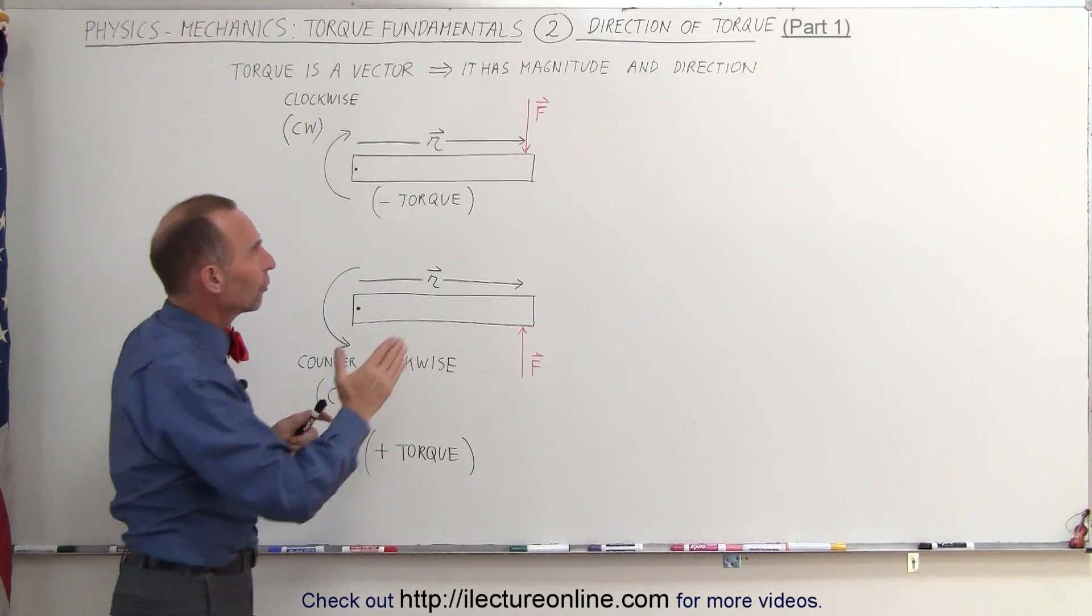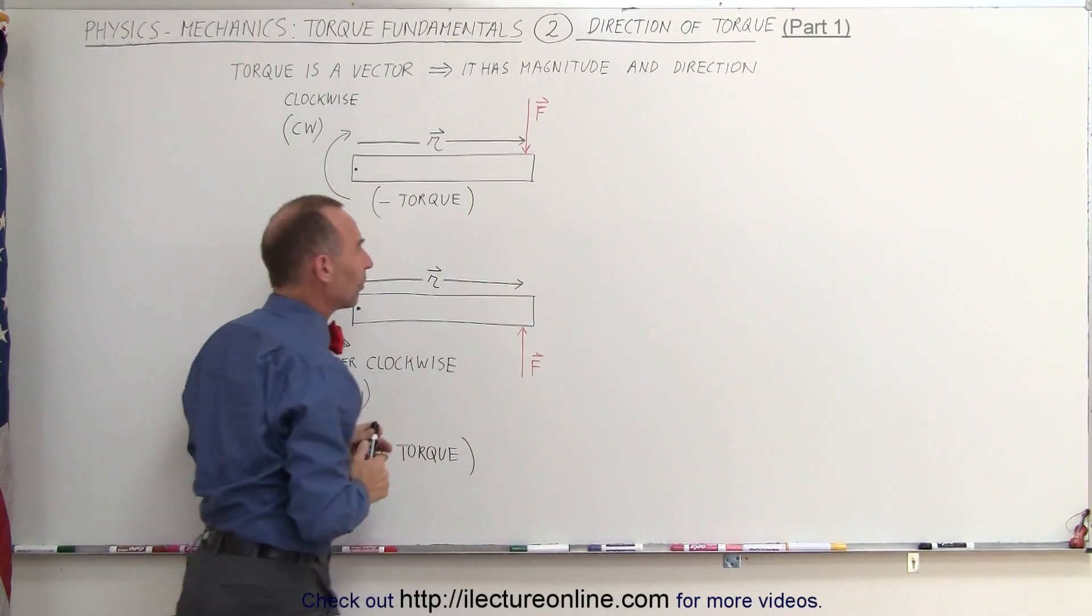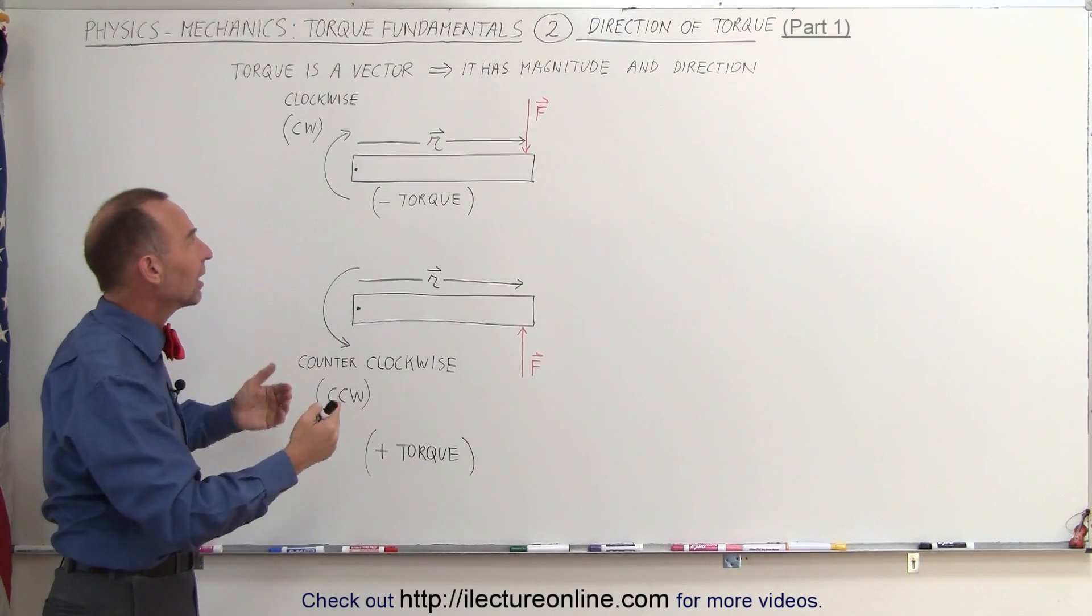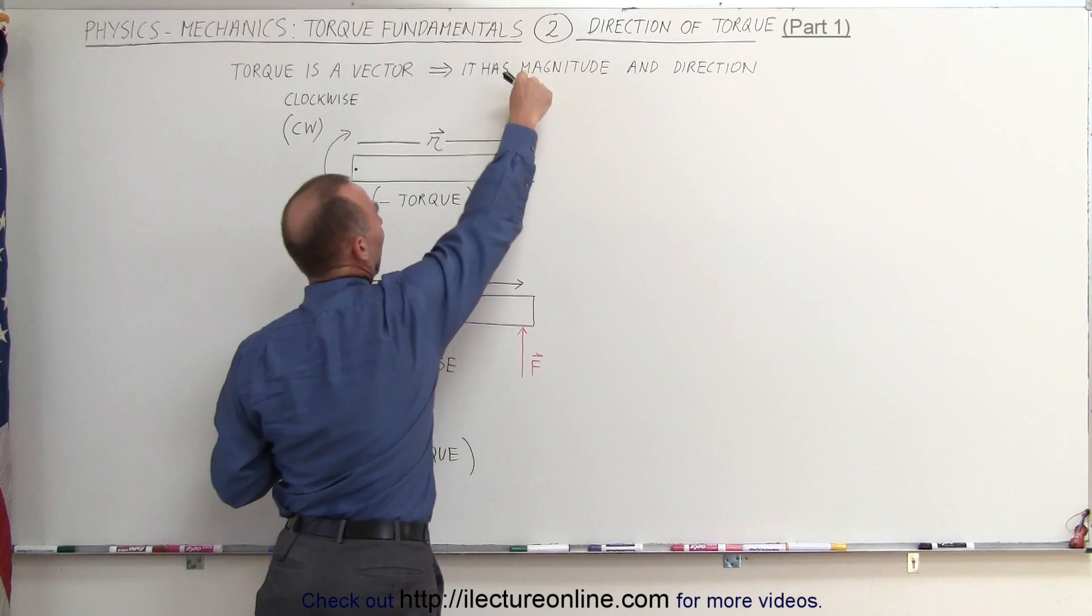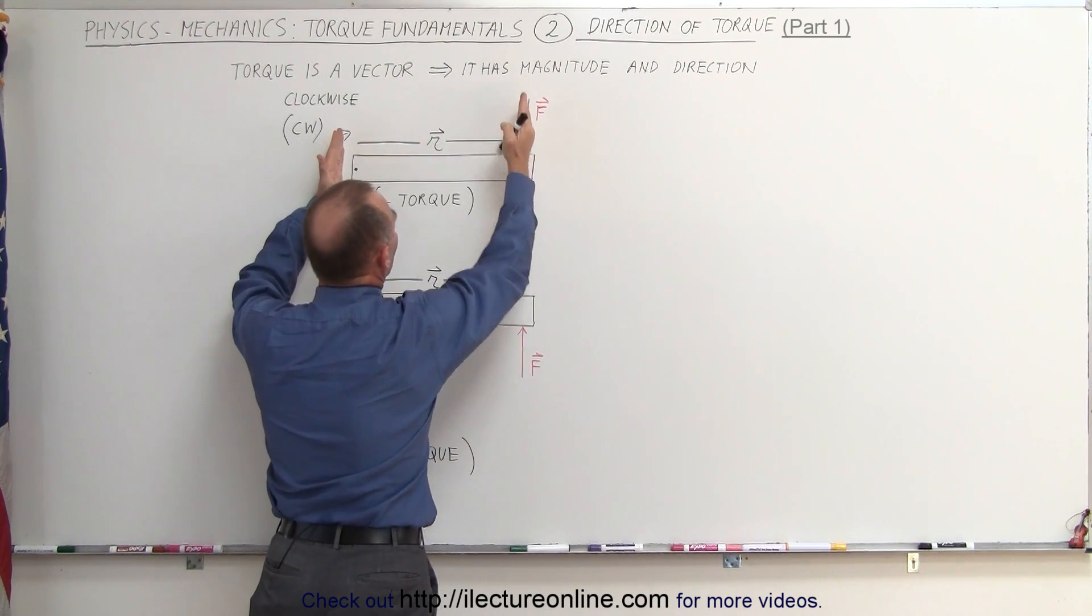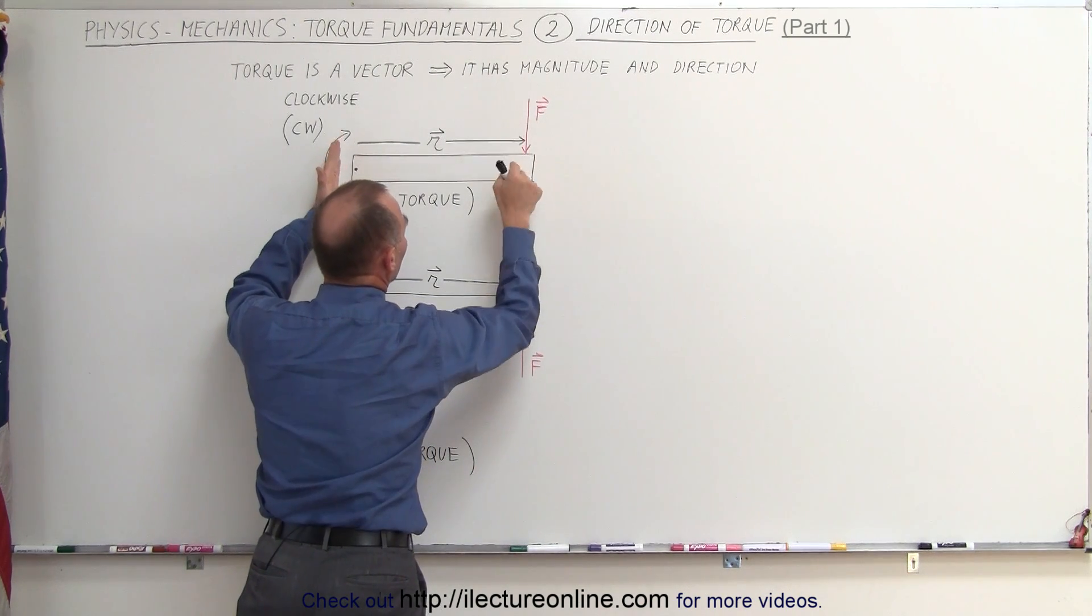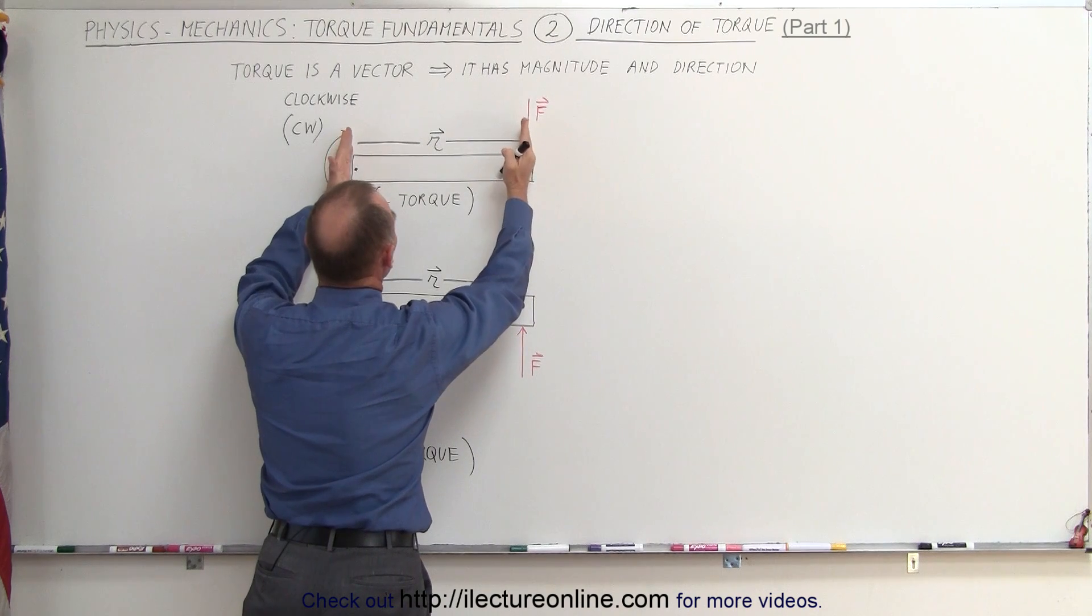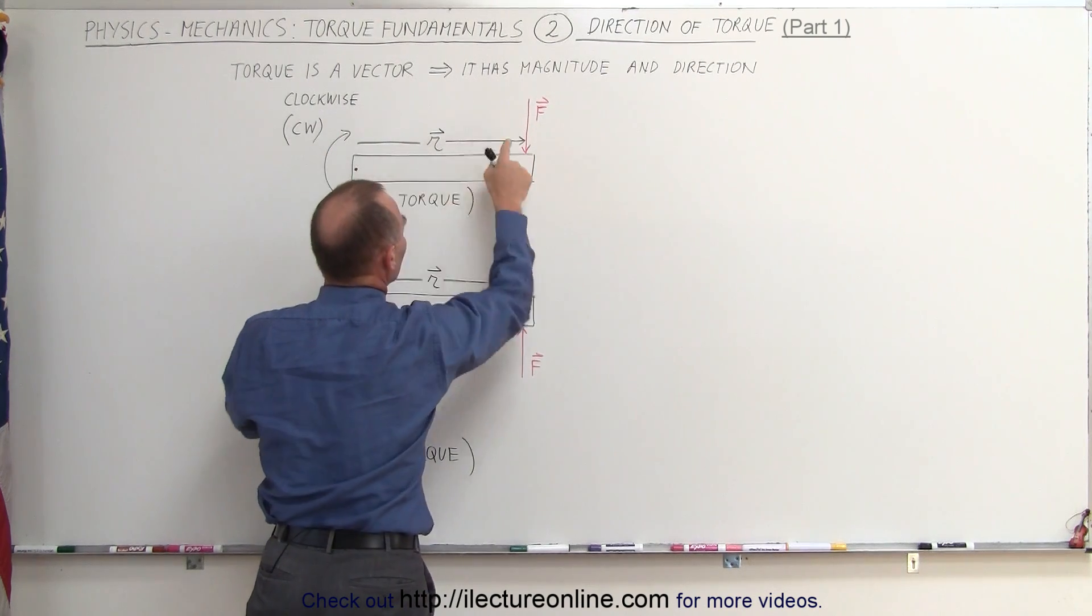Later on, we'll show you that if the force is at an angle, then we have to do something different. But at least you can see that there's a torque here. There's a force acting on the object, and the line of action of the force is not through the pivot point. It's some distance away from the pivot point. The distance here is r.